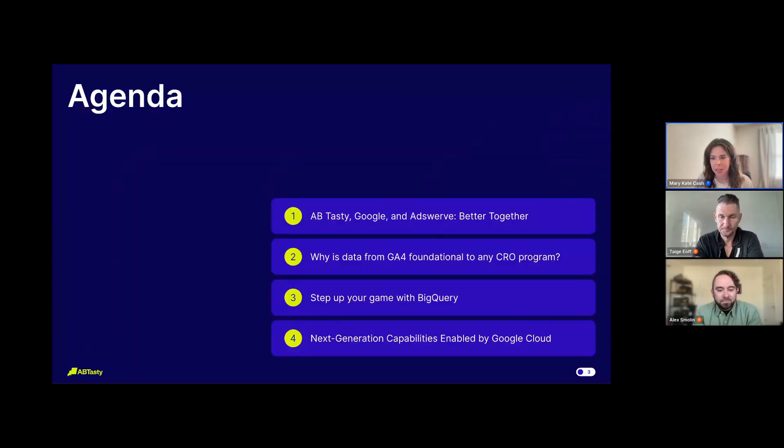Here's a quick look at the agenda. We're going to talk about why the three of us are here together, then discuss GA4 and why it's foundational and critical to CRO programs. We'll talk about BigQuery and what it can do for experimentation programs, and then look at next-gen capabilities from Google Cloud and what's coming next for digital experiences.